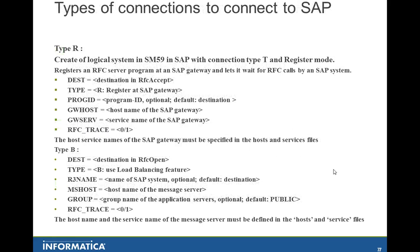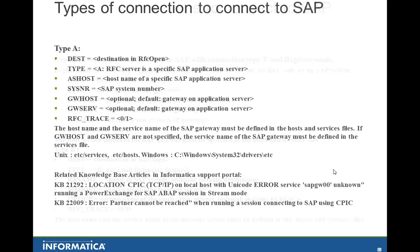Now let's look at the types of connections used to connect to SAP. We have three types: Type R, Type B, and Type A. Type R is used to register an RFC server program in the SAP Gateway. Type A and Type B are used when you import a data source and also when you run a session. To configure your saprfc.ini entries correctly and run sessions properly, you may want to refer to KBs 21292 and 22009.